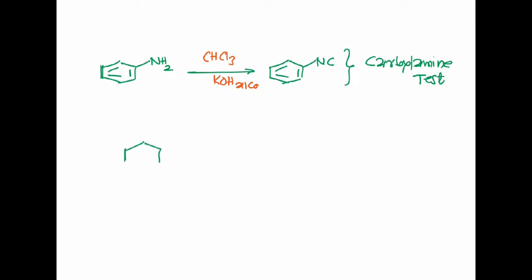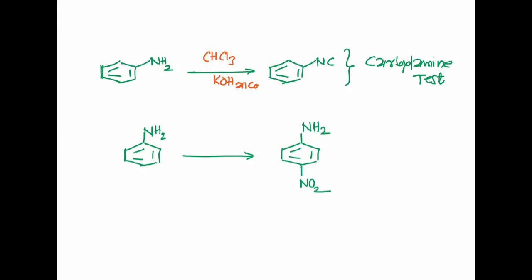Suppose I want to prepare para-nitroaniline starting from aniline. The NH2 group is an electron-donating group; it donates electron density at the ortho and para positions, so it is an ortho/para-directing group. Therefore we would get the para nitration product. This is an example of electrophilic substitution reaction.